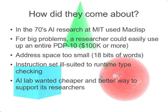So how did Lisp machines come about at all? In the seventies, AI research was running into a problem because Lisp resources were limited. The PDP-10 didn't have a lot of address space, and the instructions necessary for doing runtime type checking often dwarfed the actual cost of doing the operation, so it wasn't very efficient. A researcher could easily use up a whole PDP-10 costing hundreds of thousands of dollars, which was a little too expensive.